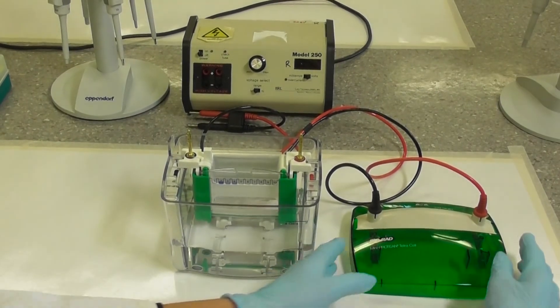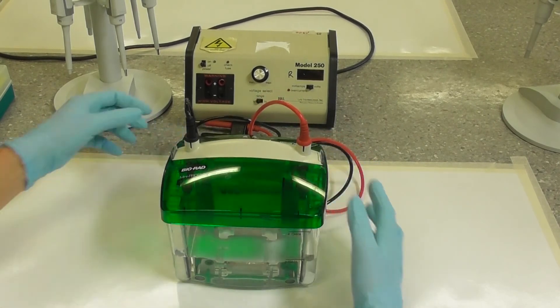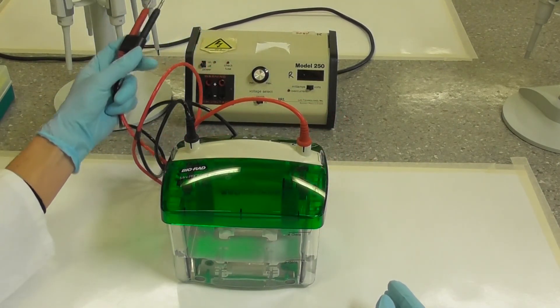Once the samples are loaded complete the assembly of the gel tank by placing the lid over the two electrodes. Black to black and red to red and press down.